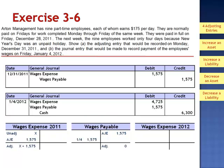When we post this journal entry to the T-accounts, the balance in wages payable is eliminated. The 2012 wages expense account has a beginning balance of zero. We add $4,725 to that balance, giving a balance as of January 4th of $4,725.